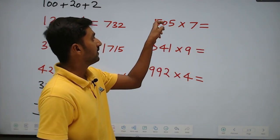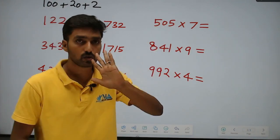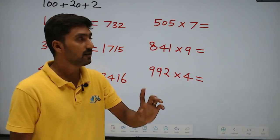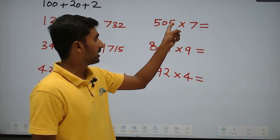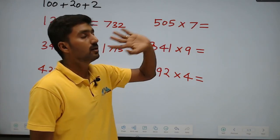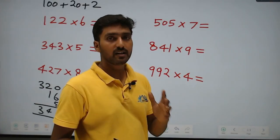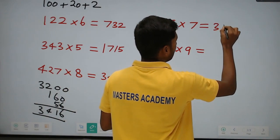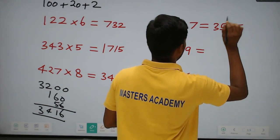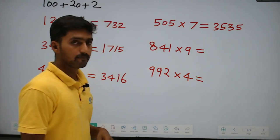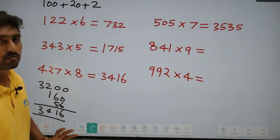The same mind calculation: 505 — split into 500 plus 0 plus 5. 500 into 7 is 3500. Plus 0 into 7 is 0. Plus 5 into 7 is 35. 3500 plus 35 is 3535. It is very simple. If you don't have doubts, just split and quick solve.